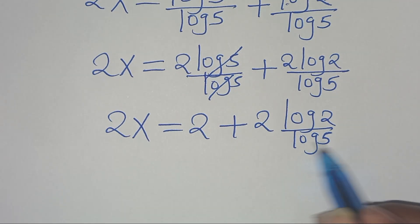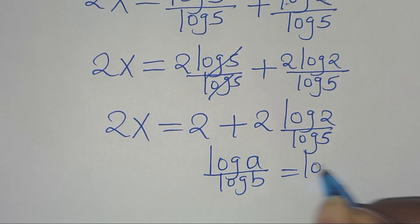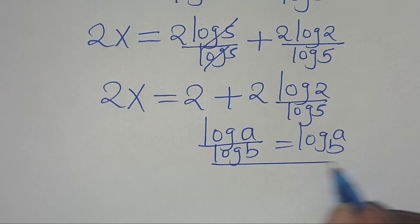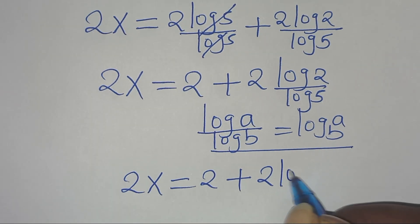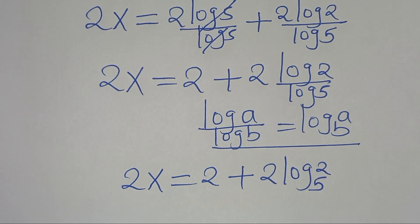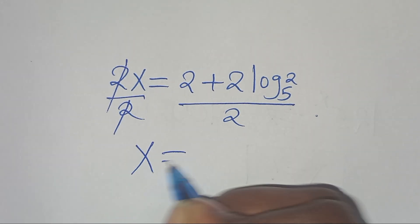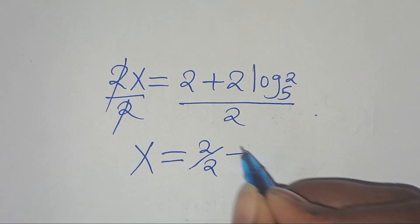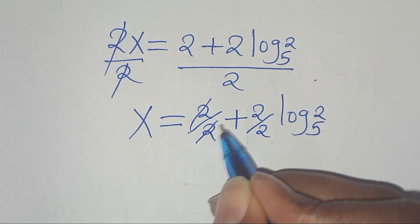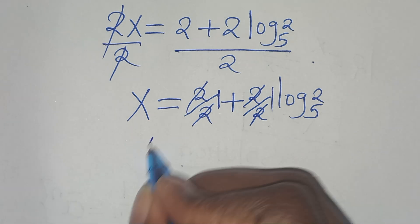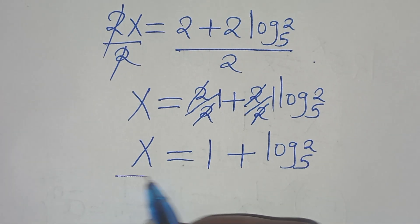Now log 2 over log 5 is in the form of log a divided by log b, which we can express as log base 5 of 2. Applying this property: 2x equals 2 plus 2·log₅2. Dividing both sides by 2: x equals 2/2 plus 2·log₅2 divided by 2. The 2s simplify, giving x equals 1 plus log₅2. This is the value of x.